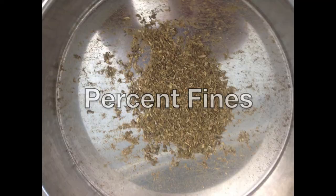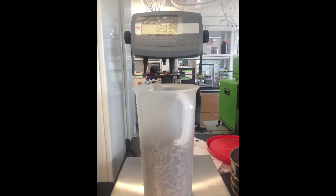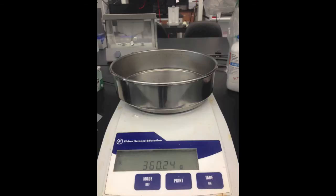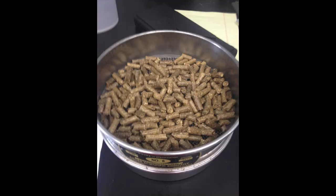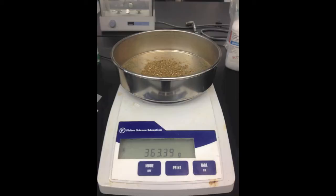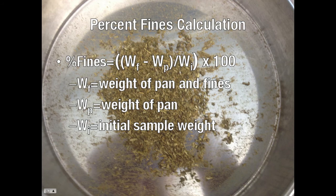Next, you will calculate the percent fines. First, obtain at least 2.5 pounds or about 1.13 kilograms of your densified biomass and weigh the sample in a tared container. Next, find and record the weight of the empty receiving pan. Attach the pan to the sieve and place about 230 grams of your sample in the sieve, or approximately one-fifth of the total sample. Sieve the sample by tilting the sieve side to side 10 times. After the first portion has been sieved, remove the sieve from the pan and remove the pellets. Repeat these steps until the entire sample has been sieved. Then remove the sieve from the receiving pan and weigh the pan and fines. To calculate percent fines, use the equation: percent fines equals weight of receiving pan plus fines minus the weight of the pan, divided by the weight of the total sample, multiplied by 100.